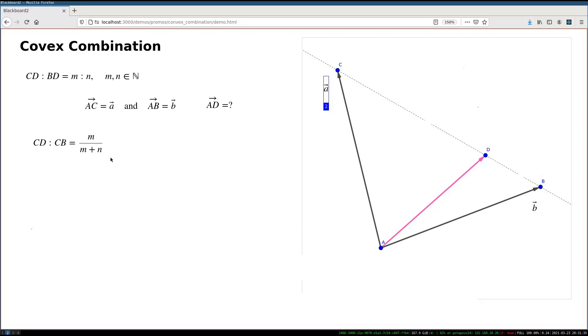And now I will transfer this into the language of vectors because now I can say that the CD as a vector, CD as a vector, is this much shorter than CB as a vector.